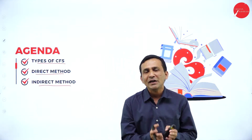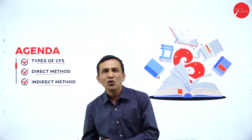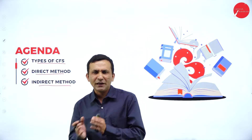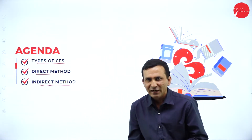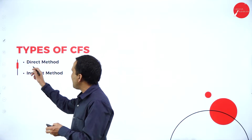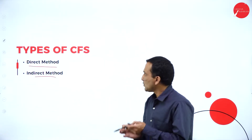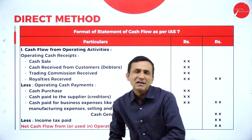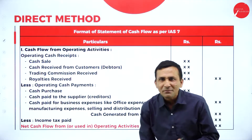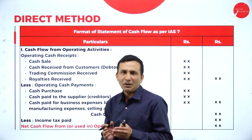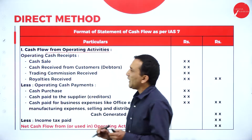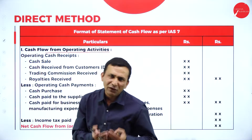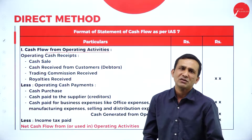In operating activity there is inflow and outflow; in investment activity there is inflow and outflow; and in financial activity there is inflow and outflow. We find out the net operating cash, net investment activity, and net financial activity. We majorly classify a direct method and indirect method. Under the first one — the direct method format — the format of the cash flow statement is as per Indian accounting standard. When we prepare it, we must remember the three important activities going in the business.